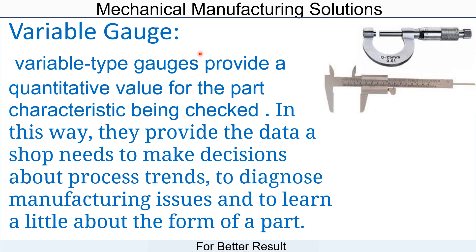During product approval — whether first-off or during production — we should know the actual reading of the product. Only then can we give approval for mass production. Variable gauges are used to measure the rating of the product, and by this reading we can ensure the product is meeting the drawing specification or not.